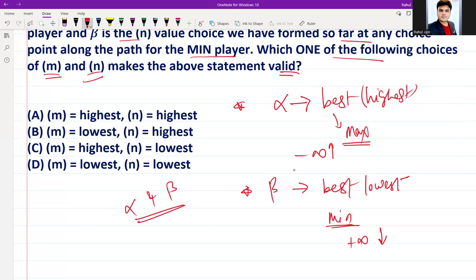For valid choices, for the max player alpha should be highest. M is representing alpha, n is representing beta. So alpha should be highest, which means B can be rejected, D can be rejected, and now A and C are left.